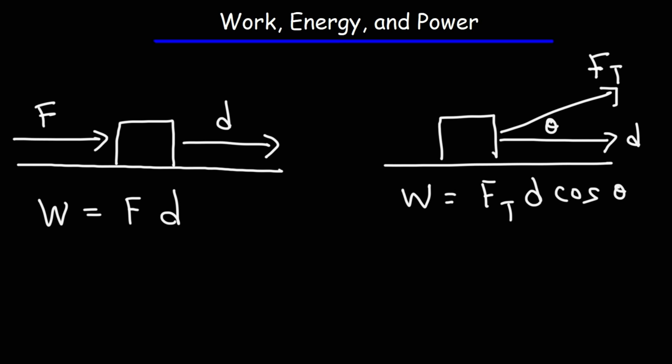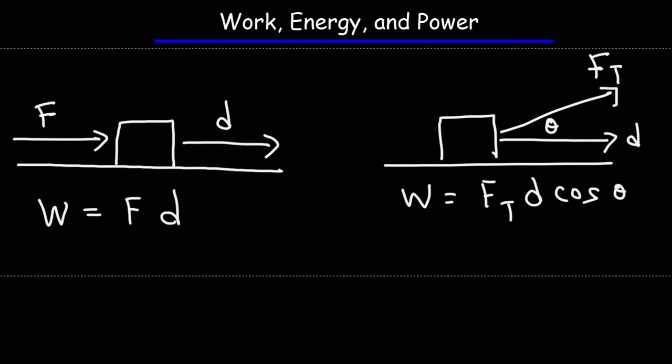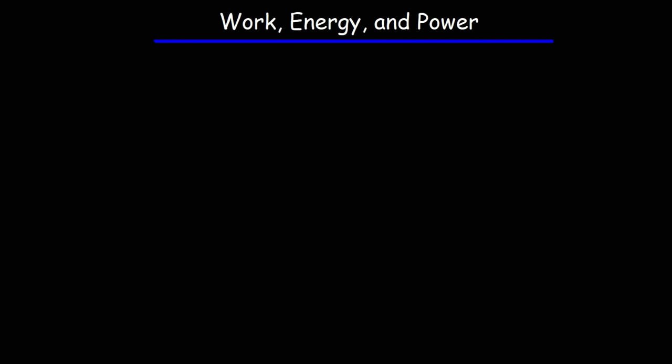Now let's talk about energy. An object with energy has the ability to do work. Anytime a force acts on an object, the force is transferring energy to the object. Let's talk about two different forms of energy you'll typically encounter in physics. The first one is kinetic energy. The word kinetic carries the idea of motion, so kinetic energy is present whenever you have an object in motion. If you have a ball that's moving, that ball has kinetic energy.